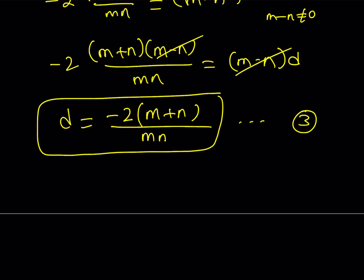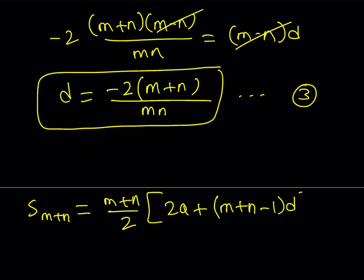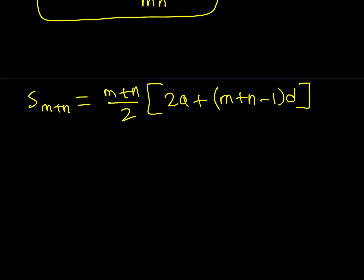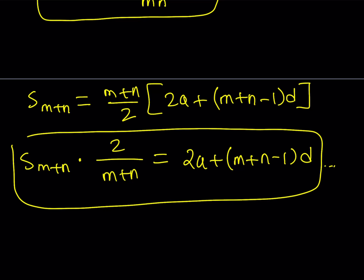Now let's write what we're trying to find: S sub M plus N. Using the formula, that's M plus N over 2, multiplied by 2A plus M plus N minus 1 times D. Multiplying both sides by 2 over M plus N gives us 2 times S sub M plus N over M plus N equals 2A plus M plus N minus 1 times D. This is equation number 4.